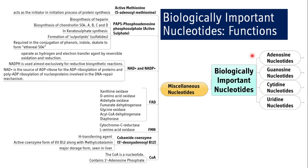Coming to miscellaneous nucleotides with important biological functions: active methionine, also called S-adenosylmethionine (SAM); phosphoadenosylphosphosulfate, also called PAPS; NAD, NADP, FAD, and FMN — these are the reducing equivalents, which are nucleotides. There is also cobamide coenzyme, that is 5'-deoxyadenosyl vitamin B12, and coenzyme A, which is also a nucleotide with a very important role.